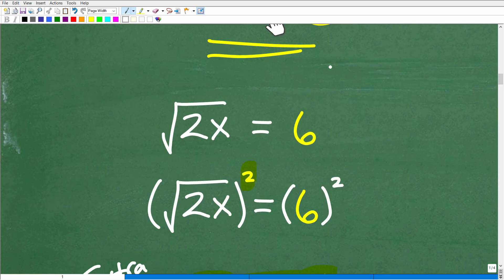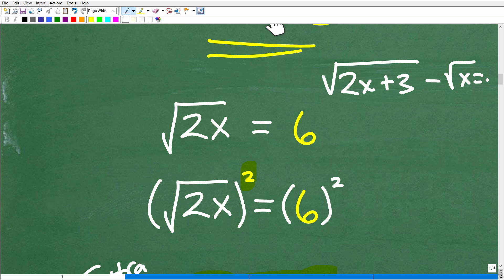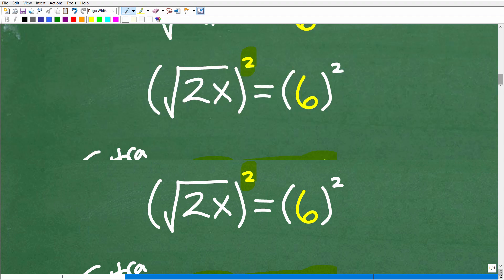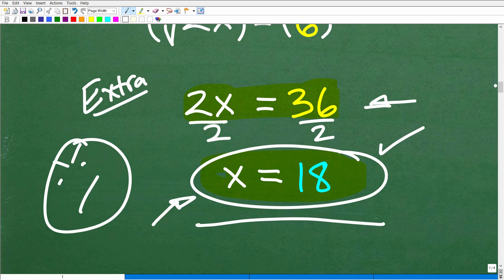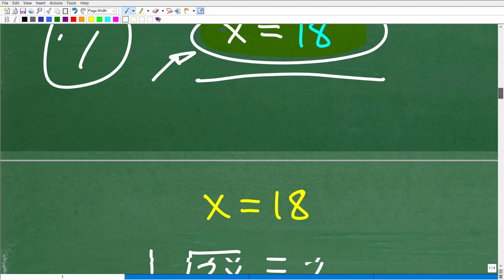There's something called extraneous solutions that can pop up. This will definitely happen in more sophisticated radical equations. We're doing something pretty easy right here, but if I gave you an equation like this, 2x plus 3 minus the square root of x equals 5, something crazy like this, these type of equations can definitely end up with an extraneous solution which is not a real solution. The only way we know whether a solution is extraneous or not is we need to check it into the original equation.